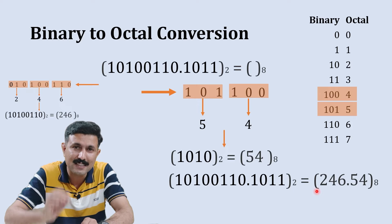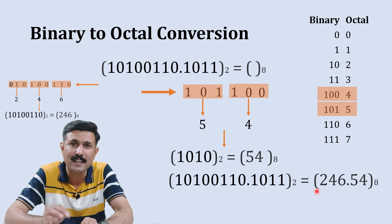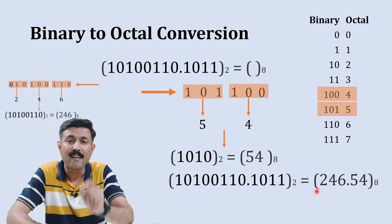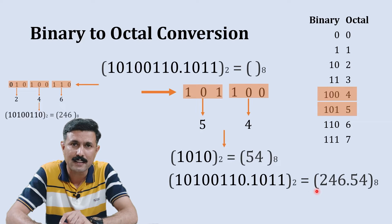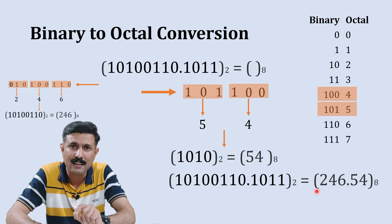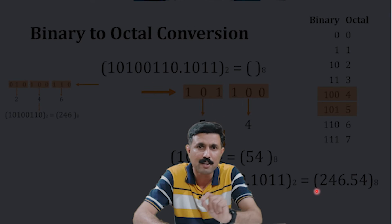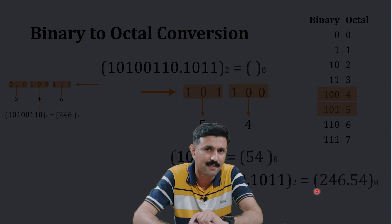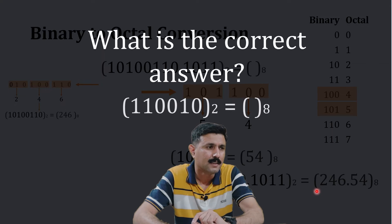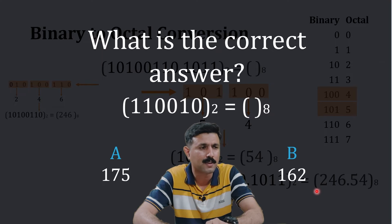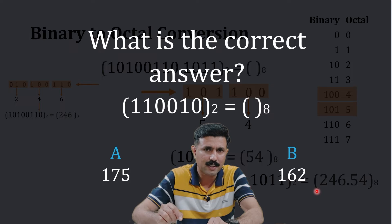When we combine both parts together, we get the complete number 246.54, which is the octal equivalent to the binary. Don't you think using this method you can solve it within 30 seconds? Let's have a verification check. I am giving you a quick short question.